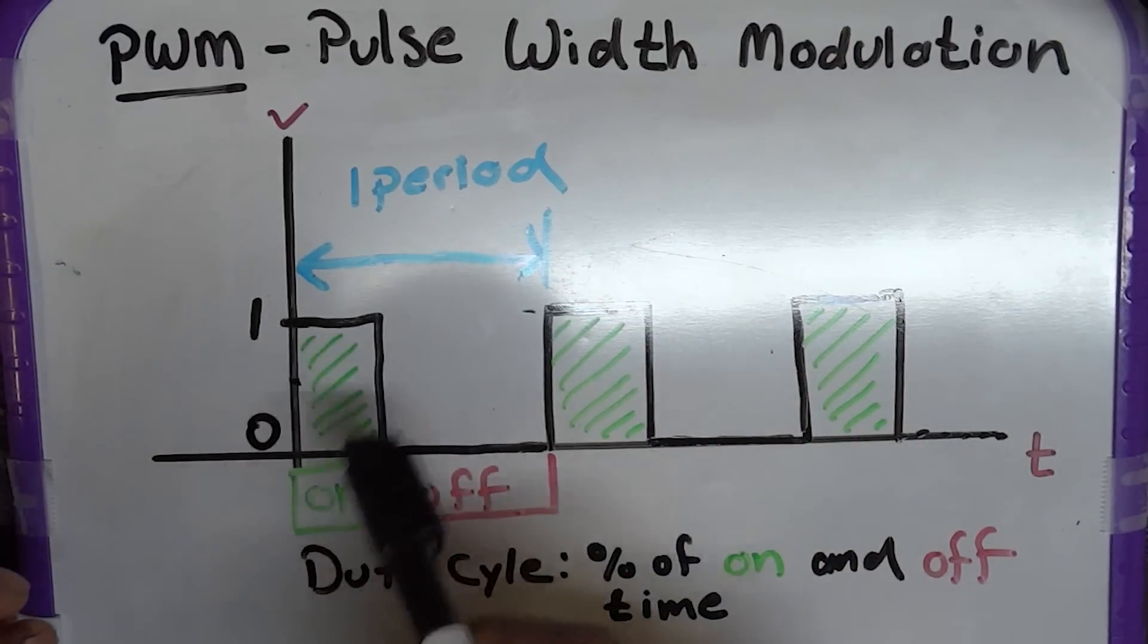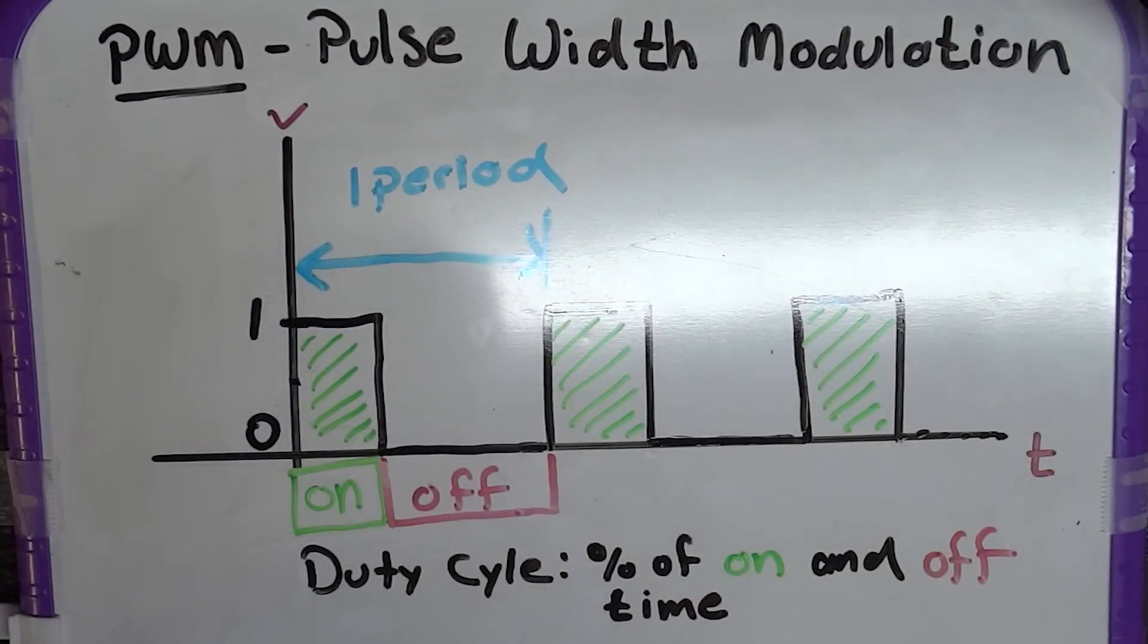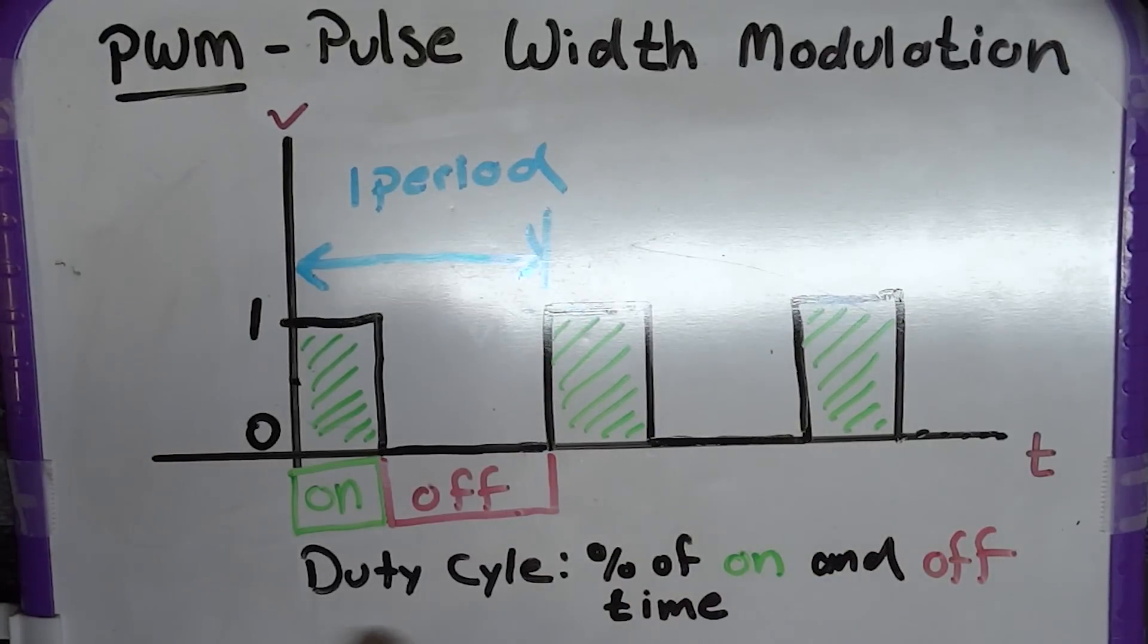So this in the green is how long it's on and what's not highlighted is off. So given that, let's discuss something called duty cycle. Now, the duty cycle is the percentage of on and off time.